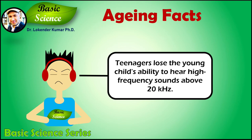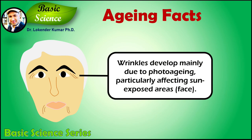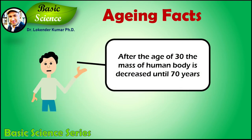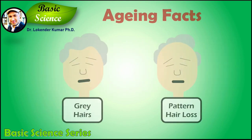Interesting facts about aging: teenagers lose the young child's ability to hear high-frequency sounds above 20 kilohertz. Wrinkles develop mainly due to photo-aging, particularly affecting sun-exposed areas like the face. After the age of 30, the mass of the body decreases until 70 years and then shows damping oscillations. People over 35 years of age are at risk of developing presbyopia, and most people benefit from reading glasses by age 40 to 45.